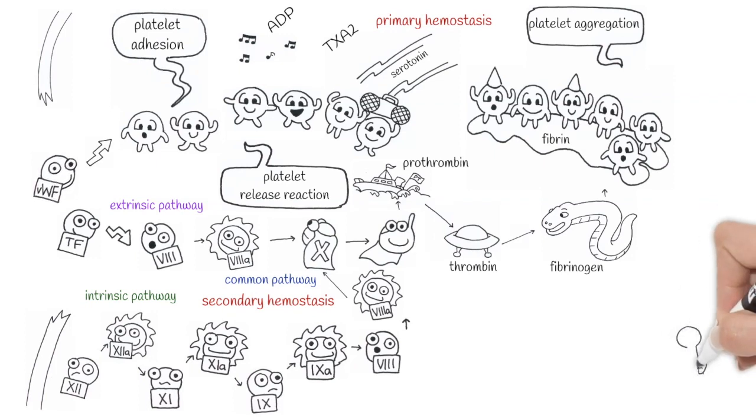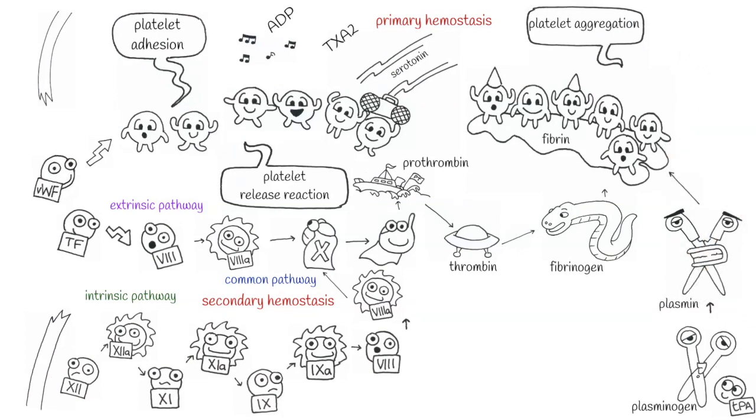I like to imagine plasminogen as a happy scissors that when it meets the tissue plasminogen activator becomes a mad scissor, which is plasmin, and that cuts all the fibrin.